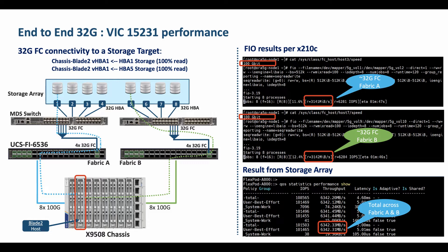The FIO test capture shows that a single VHBA can do end-to-end 32GB fiber channel IO against the LUNs behind each of the 32GB fiber channel targets. Across the two VHBAs and the two 32GB fiber channel targets in the A and B fabrics, the X210C compute node achieves a cumulative fiber channel bandwidth of 64GB.